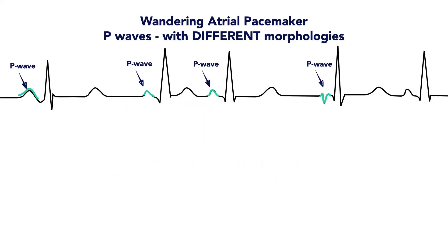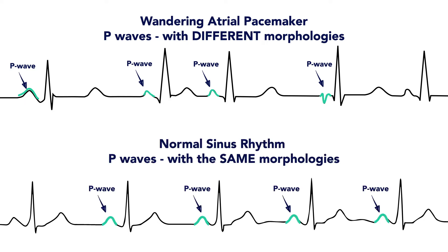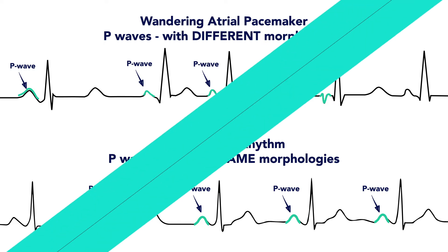This is in contrast to normal atrial conduction from SA to AV node, where the P wave preceding every QRS complex has the same shape or morphology. That's because these P waves are coming from electricity originating from the same place every single time.